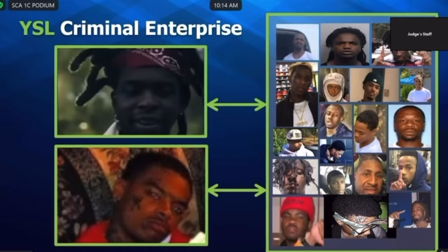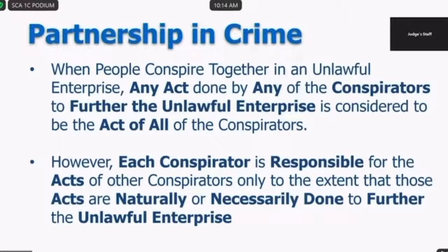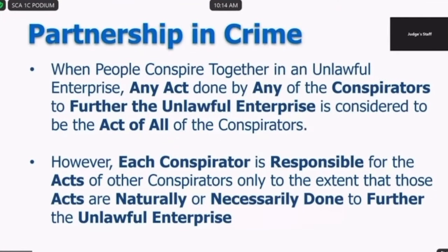Let's walk through what an Overt Act is. Joint objectives equal joint responsibility — this is like a partnership in crime. Any act done by any co-conspirator to further the criminal objectives is what counts. So if they shoot a rival to help YSL the enterprise, whoever you find is part of that conspiracy, it's all for one and one for all. Each co-conspirator is responsible for the acts of others that are naturally and necessarily done to further the enterprise.